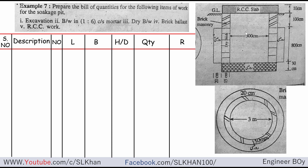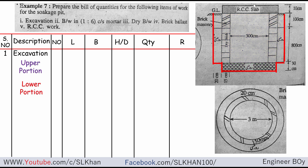The first thing is we're asked to calculate the excavation. Just look at the long section — this can be the excavation path. We got two types of excavation or two portions: the upper portion which is this long rectangle, and the lower portion which is just this small rectangle type.